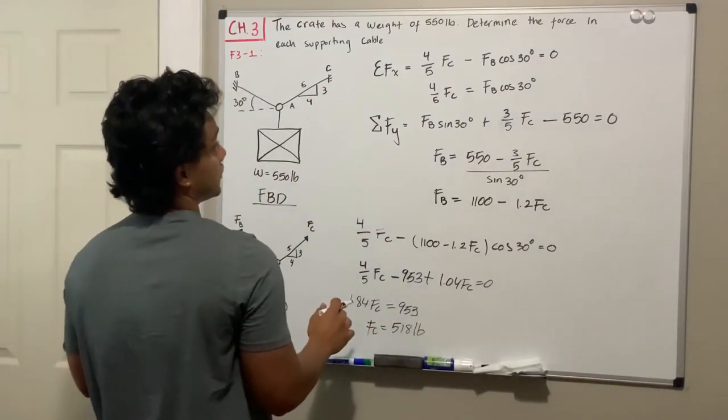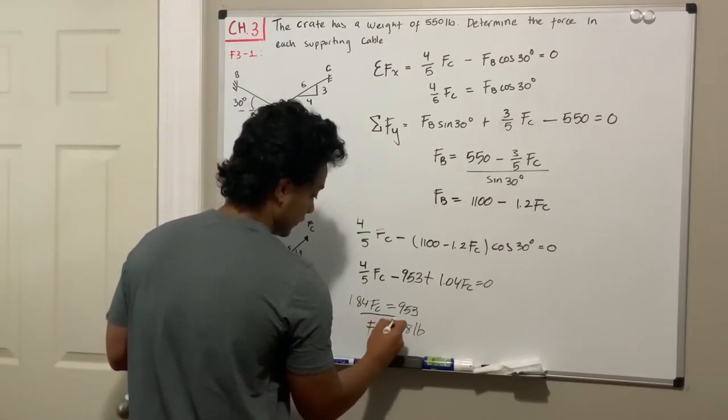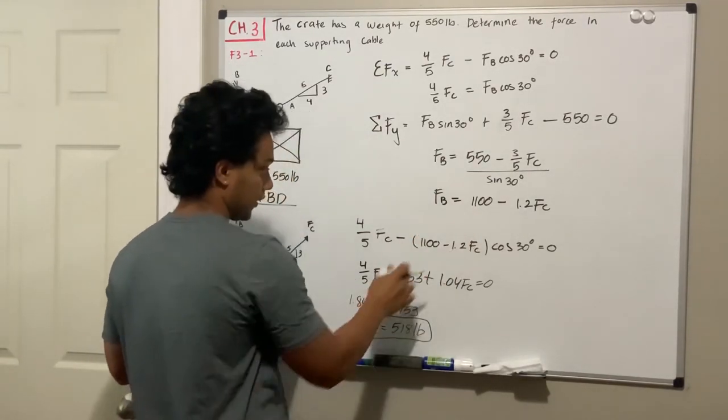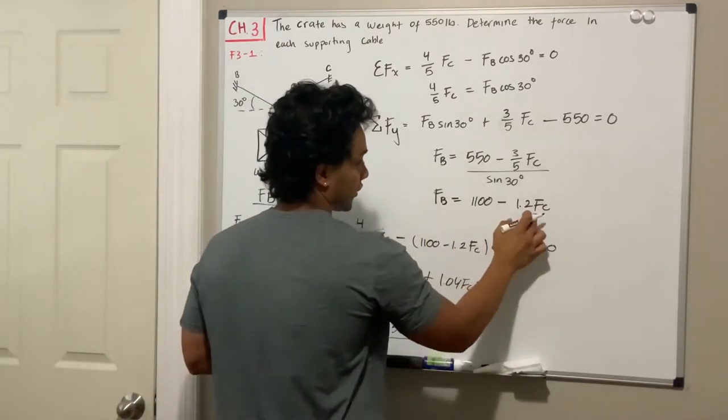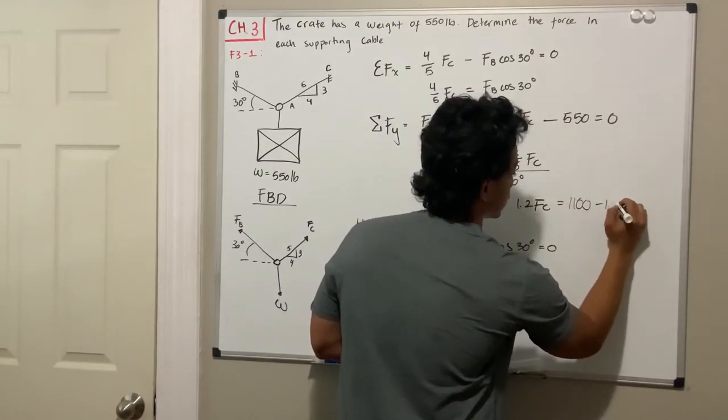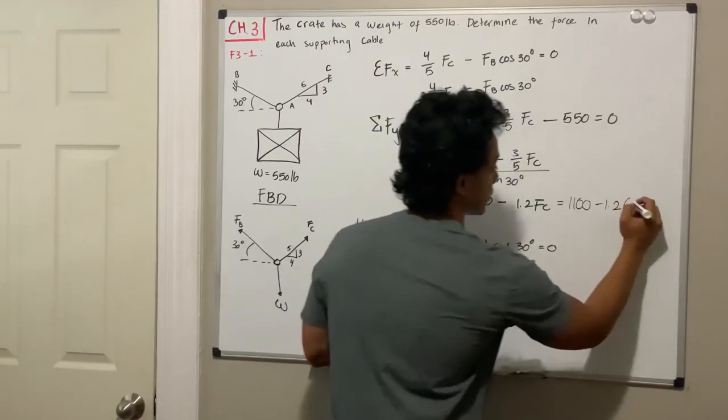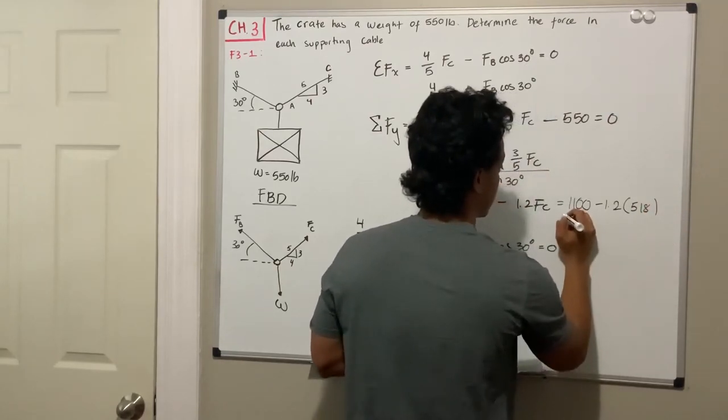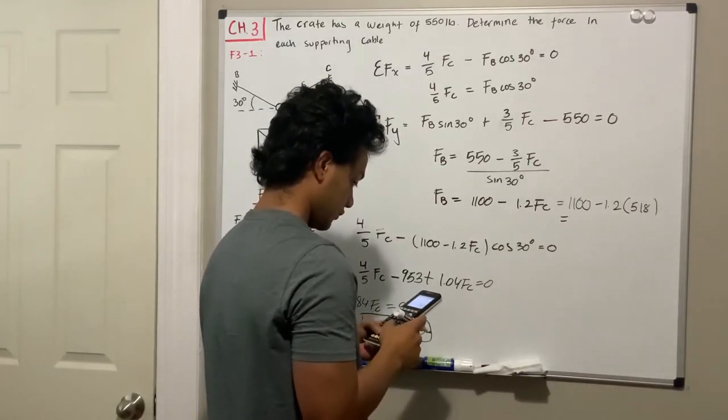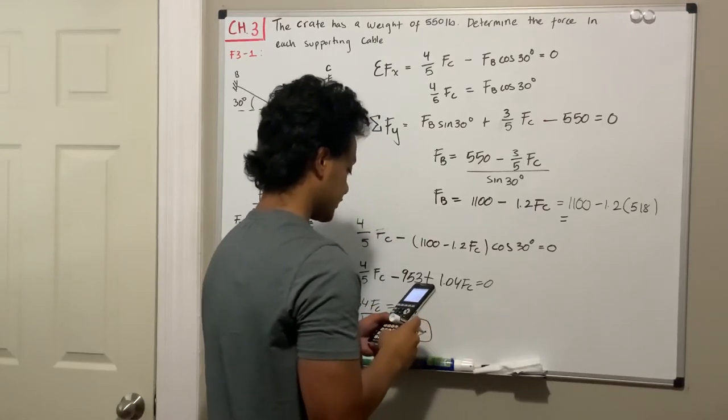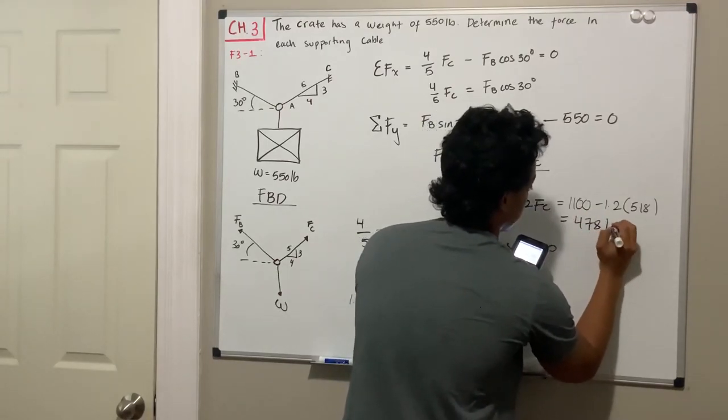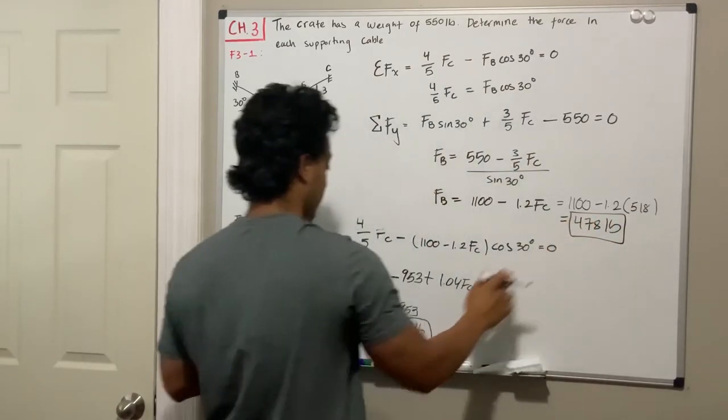So this is one of the forces that we're supposed to calculate. We found the first one. And then for the last one, we can use this equation. If we know F_C, then we plug the number in here and we're done. This will be equal to 1100 minus 1.2 multiplied by our answer, which is 518 pounds. And this is equal to, let's see, 1.2 multiplied by my answer, and then we subtract that from 1100 and it will give us 478 pounds. So we have F_B and F_C.